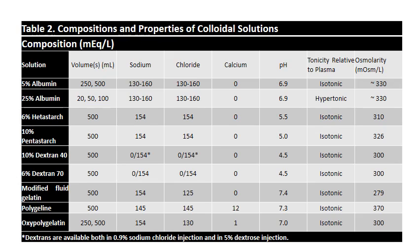As shown in the previous slide, these are all the available colloids, with their content, tonicity, and osmolarity listed. Note that most are commonly isotonic; the only hypertonic colloid is 25% albumin. Most colloids are around physiologic pH, but the dextrans - which we don't use very much anyway - have a lower pH.